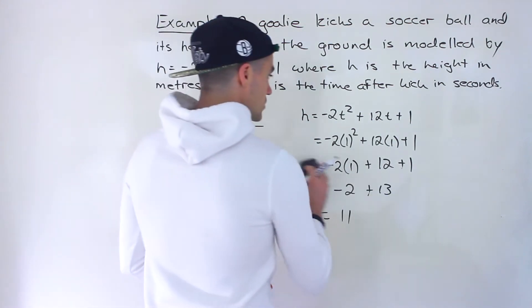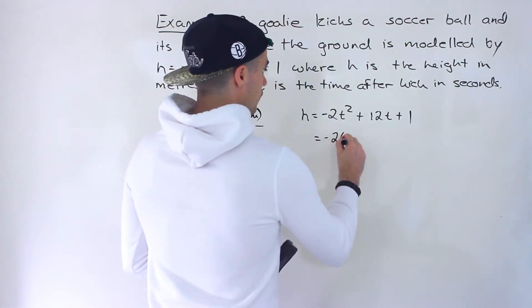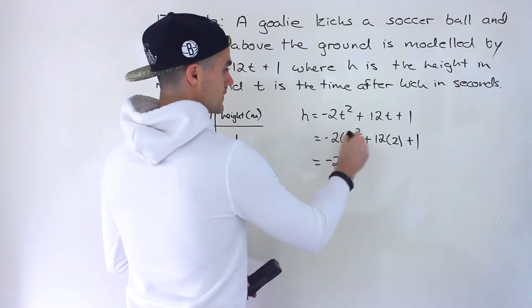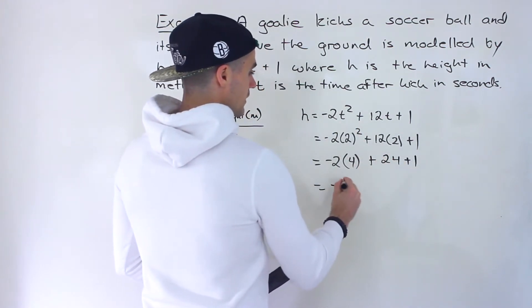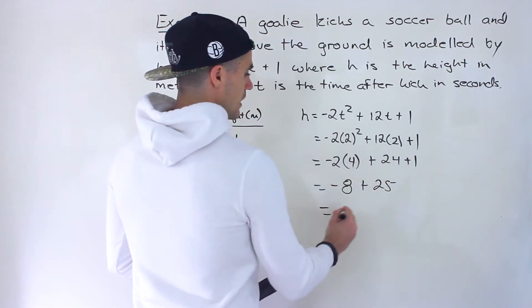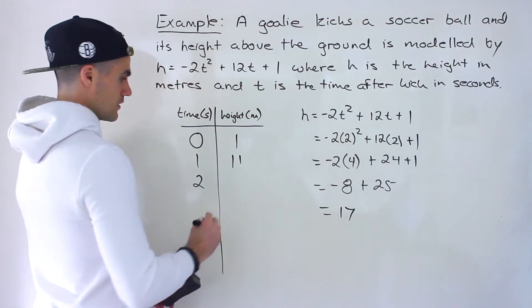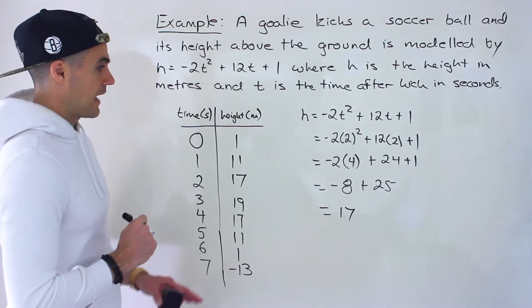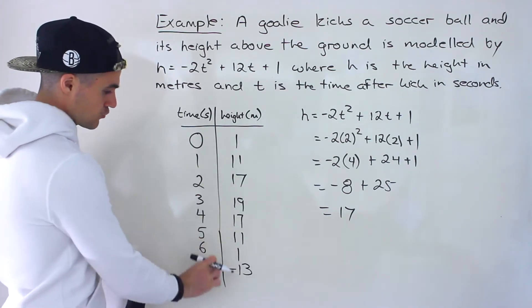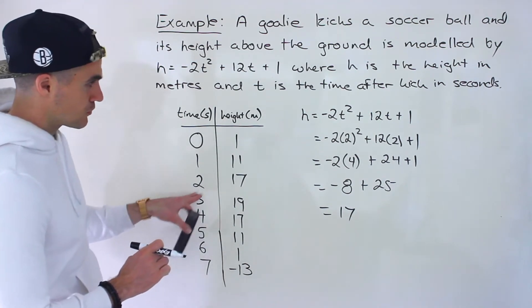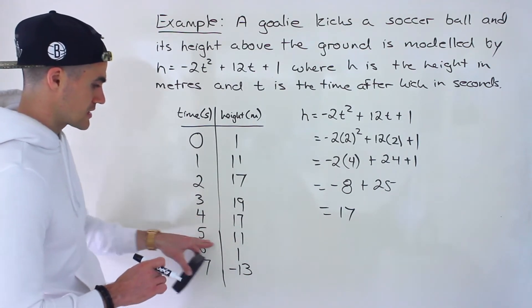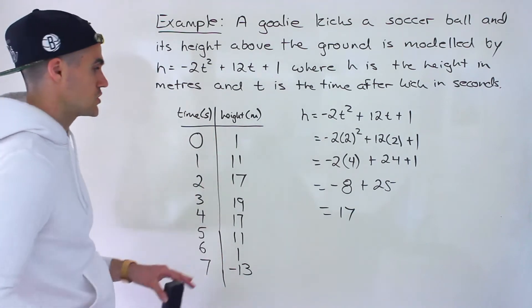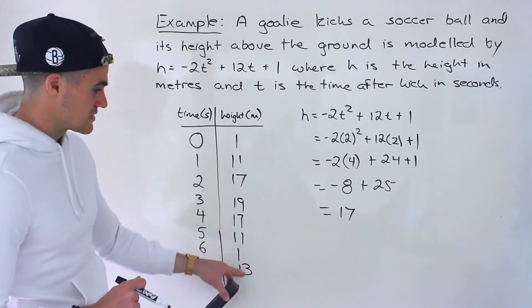For t = 2: 2 squared is 4, so we have negative 8 plus 24 plus 1, which is negative 8 plus 25, giving 17 meters at 2 seconds. Following the same process: plugging in t = 3 gives 19, t = 4 gives 17, t = 5 gives 11, t = 6 gives 1, and t = 7 gives negative 13. Once you get a negative number you can stop the table, and make sure you're doing the correct BEDMAS calculations throughout.